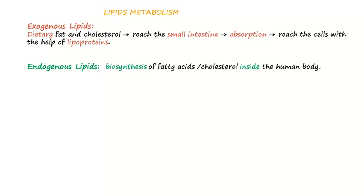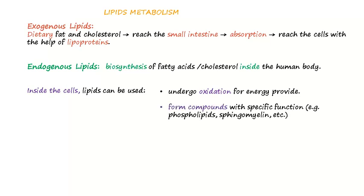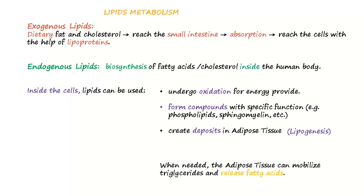Both types of lipids, exogenous or endogenous, inside the cell can be used to undergo oxidation for energy, form compounds with specific function, or create deposits in adipose tissue. The latter process is named lipogenesis. When needed, the adipose tissue can mobilize triglycerides and release fatty acids. This process is lipolysis. Lipogenesis and lipolysis are bi-directional reactions.